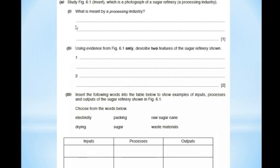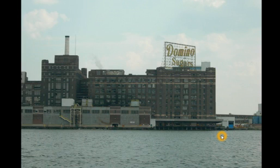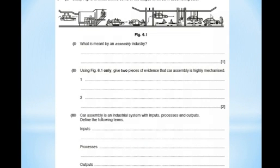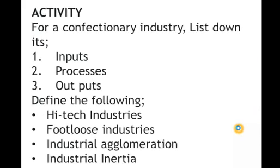There's an exercise coming up. A photograph of the Domino Sugar refinery — a processing industry — is shown, with questions for you to answer. There is also an illustration of an assembly industry showing vehicles, with questions to follow. Take a look at the pictures and answer the questions; we will review the answers later.